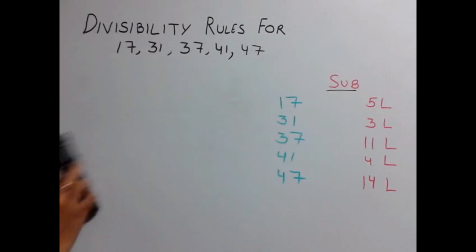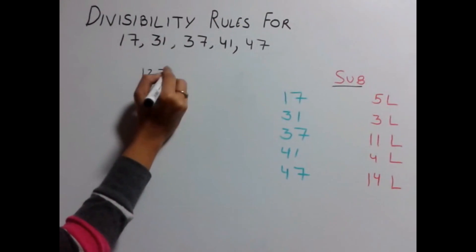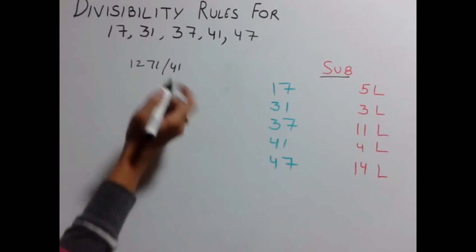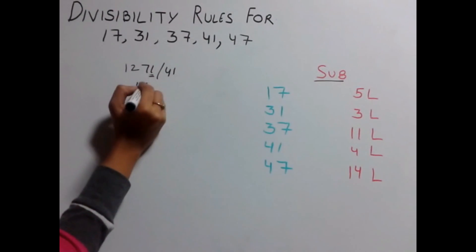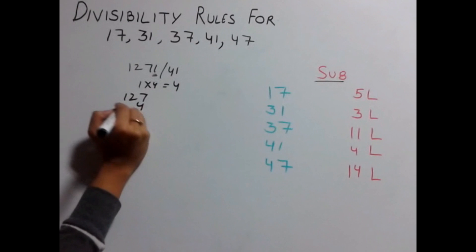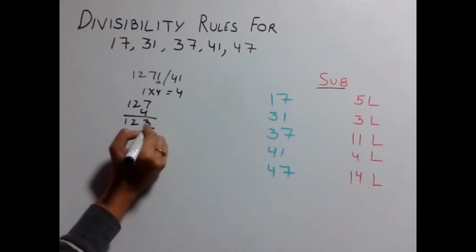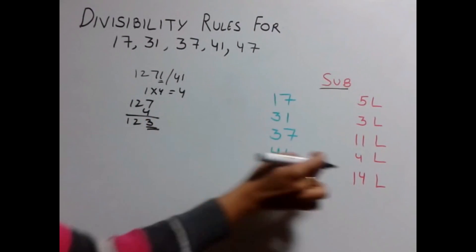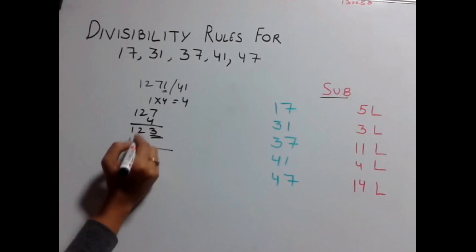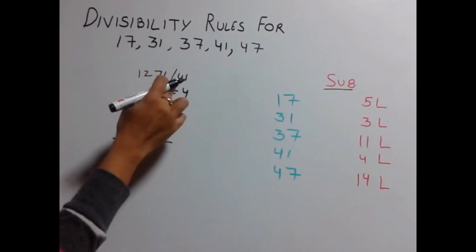Let's check the same number 1271 for divisibility by 41. For 41, multiply the last digit by 4. So 1 × 4 gives you 4. Subtract it from 127, which gives you 123. Now the last digit is 3. Multiply 3 by 4: 3 × 4 is 12. Subtract it: 12 − 12 is 0. So our number is also divisible by 41.